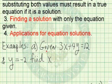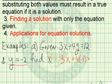Let's begin with the example given 3x plus 4y equals 12 and we know that y equals negative 2. Find the value of x. So we take the original equation, 3x plus 4. We replace y with negative 2, being careful to select the right letter.